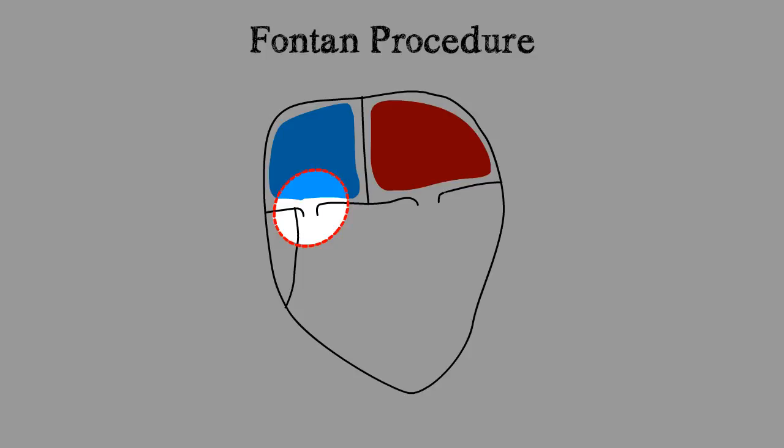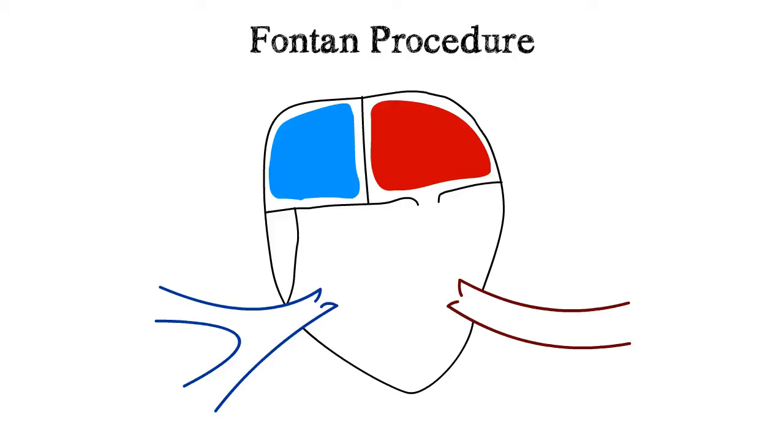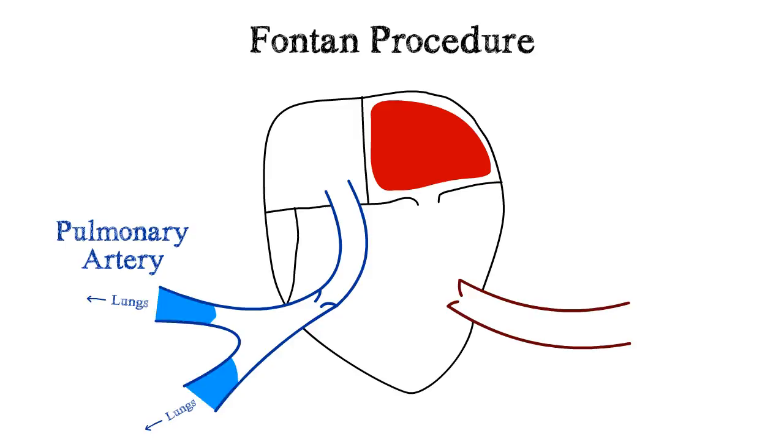Second, the surgeon closes off the valve between the right atrium and the large ventricle. Next, because blood is not free to go to the ventricle, the surgeon creates a direct connection between the right atrium and the pulmonary artery. The pressure in the right atrium is the only power source to move blood through to the lungs. There is no ventricle to pump blood through the lungs.